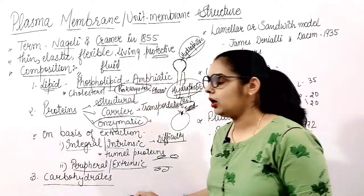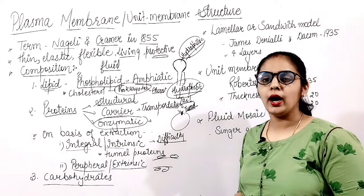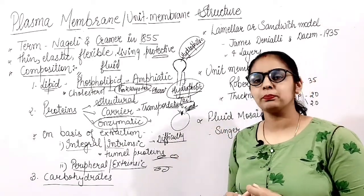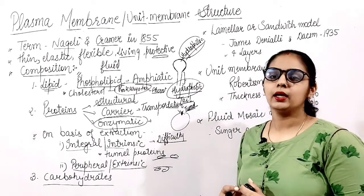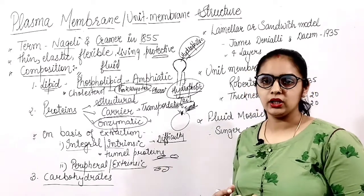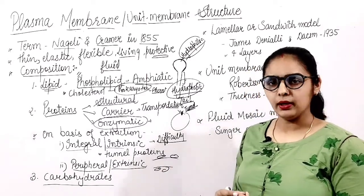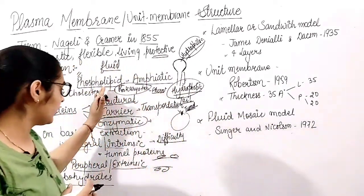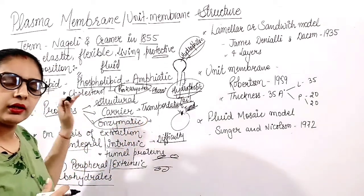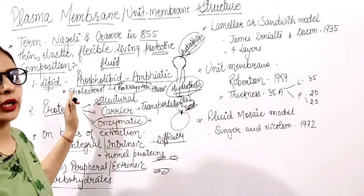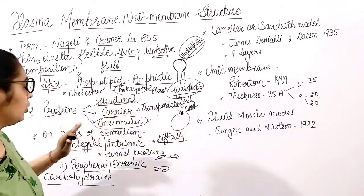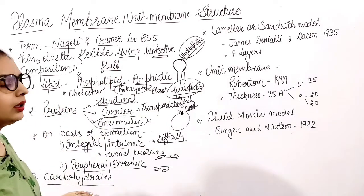Besides lipids and proteins, carbohydrates are also present in the plasma membrane. These are complex carbohydrates such as glycoproteins and glycolipids. So the composition of the plasma membrane is: lipids, proteins, cholesterol (in eukaryotes, absent in prokaryotes), and carbohydrates.